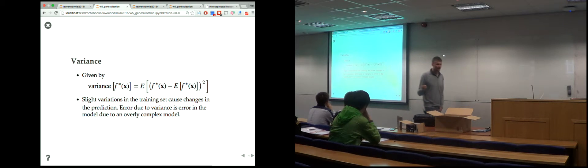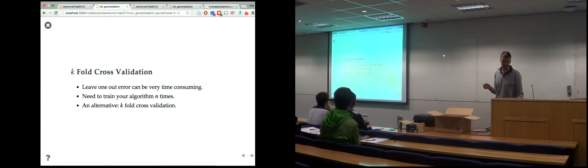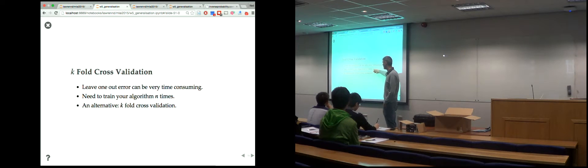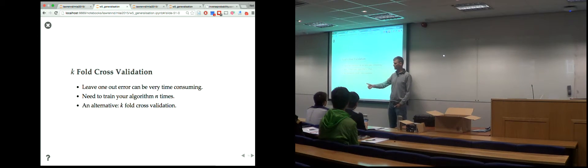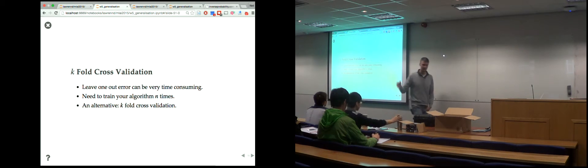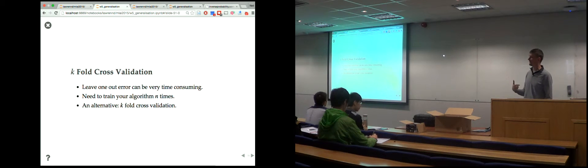Instead of leaving every data point out, we do k-fold cross-validation. For leave-one-out you need to train the model n times. The alternative is k-fold cross-validation: what we did with the interpolated holdout set, but done multiple times — taking every section of the data out. Select five points to validate, train on the other 21, then select a different five, train on the other 21, and so on until all have been tested with disjoint sets.